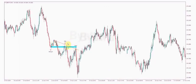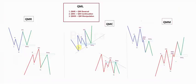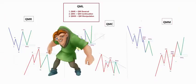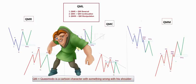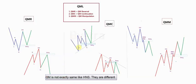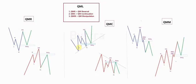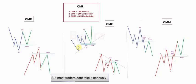This time we have confluence. Now let's move to the QM setup. QM is a cartoon character that has a crooked shoulder — and this setup is not exactly the same as H&S or head and shoulders. If you search in Google, there are a lot of this kind of setup and people keep sharing it, but most traders don't take it seriously.